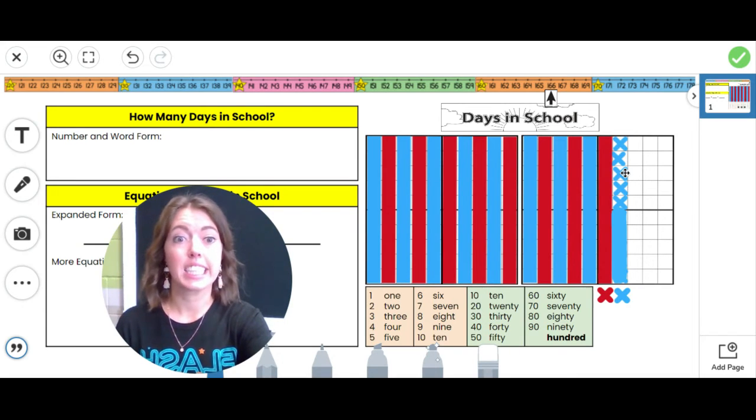One hundred sixty-seven, one hundred sixty-eight, one hundred sixty-nine, one hundred seventy. This is one hundred squared. And then seven ten-rods. One hundred seventy.